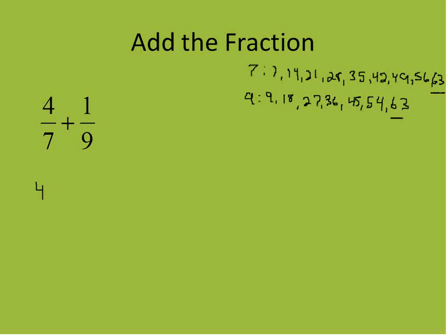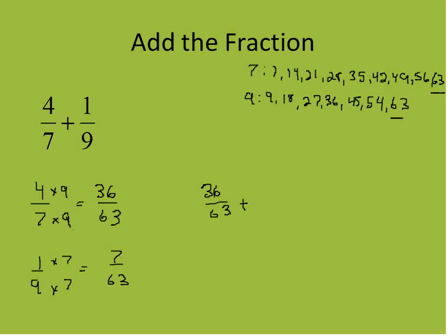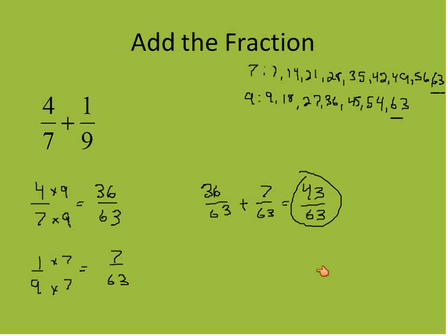I'm going to multiply 4/7 times 9 on both top and bottom: 4 times 9 is 36, 7 times 9 is 63. Then for 1/9, I multiply top and bottom times 7 to give me 7/63. Now I have 36/63 plus 7/63, which gives me 43/63. That is our fraction in lowest terms and the final answer. Finding the LCM was more challenging here since 7 and 9 share no common factors.